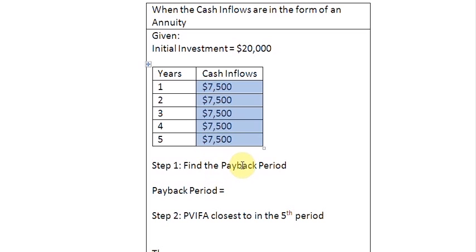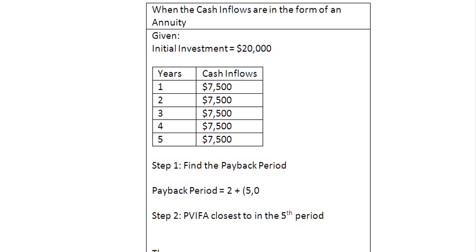Step one is to find out the payback period. Looking at the cash flows of the first two years, out of the $20,000 we need to recover, we recover $7,500 plus $7,500, that is $15,000 already. So the number of years before total recovery is 2. Coming into the third year, we have $5,000 unrecovered. We divide $5,000 by the cash flow in the third year, which is $7,500, giving us a payback of 2.67 years.